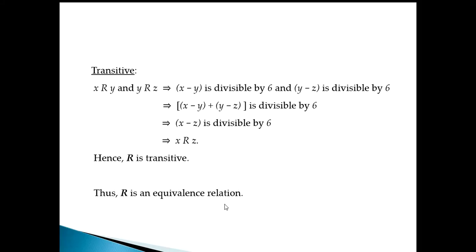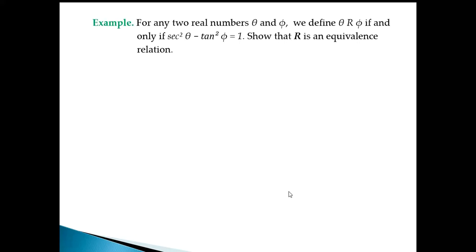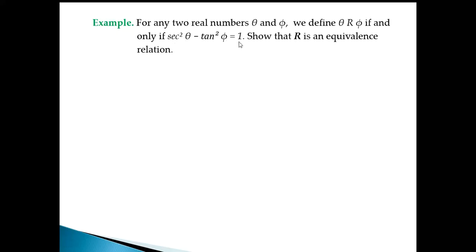Now let's take another example. For two real numbers θ and φ, we define θ is related to φ if and only if sec²θ minus tan²φ equals 1. We have to show that R is an equivalence relation. Let's start with the proof.